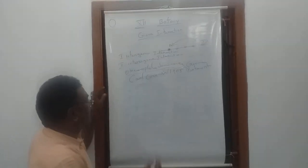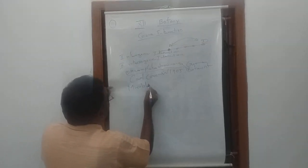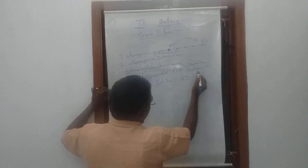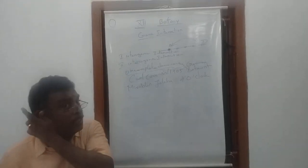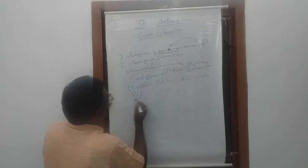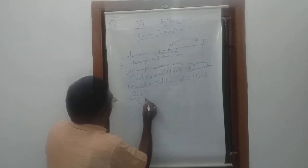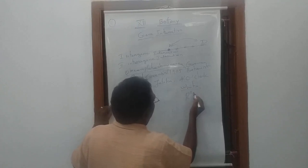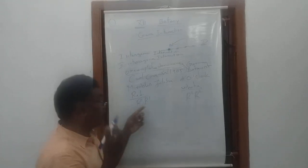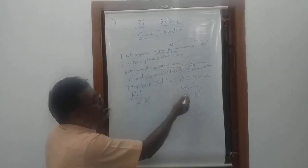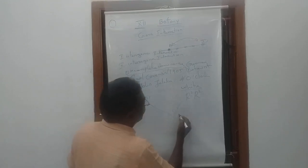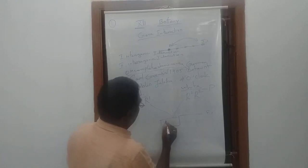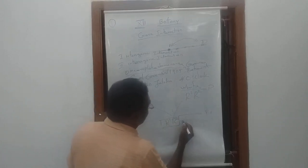He studied incomplete dominance in Mirabilis jalapa. In this plant, there are two varieties: one is red flower, denoted by R1, and another one is white flower, denoted by R2. These two plants are homozygous. When we cross them in the parent generation, the first generation gives plants with R1R2 genotype, and all the flowers are pink.